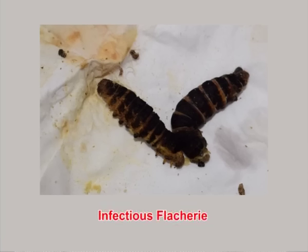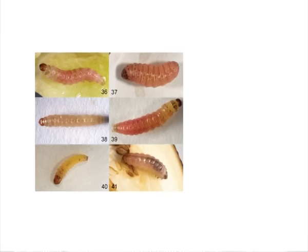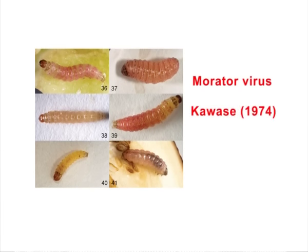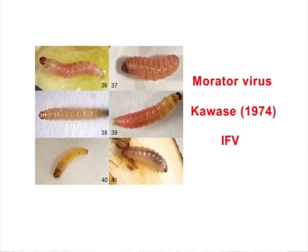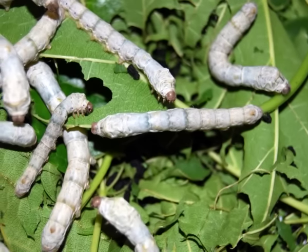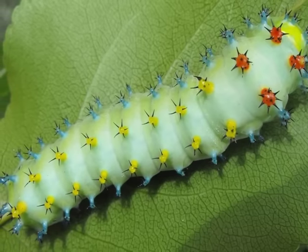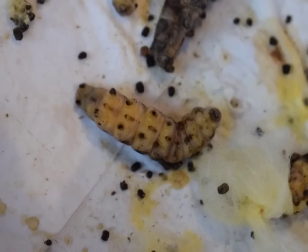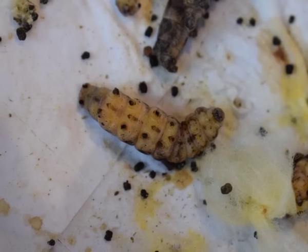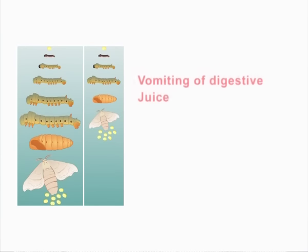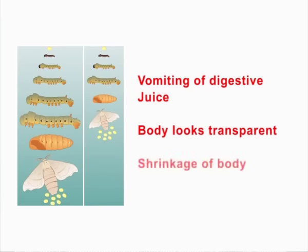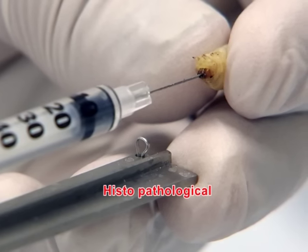Viral diseases — Infectious Flaccid: Infectious flaccid was formerly classified along with bacterial flachery. The causative organism is the Morator virus, named IFV by Kawakami in 1974. It differs from other viral infections in that it does not form polyhedra. Infection is spread orally, with an incubation period of 7 to 12 days. Early instars are more susceptible to infection than later ones. Symptoms include vomiting of digestive juice, body appearing transparent, and shrinkage of body. Identification is by histopathological or serological techniques.